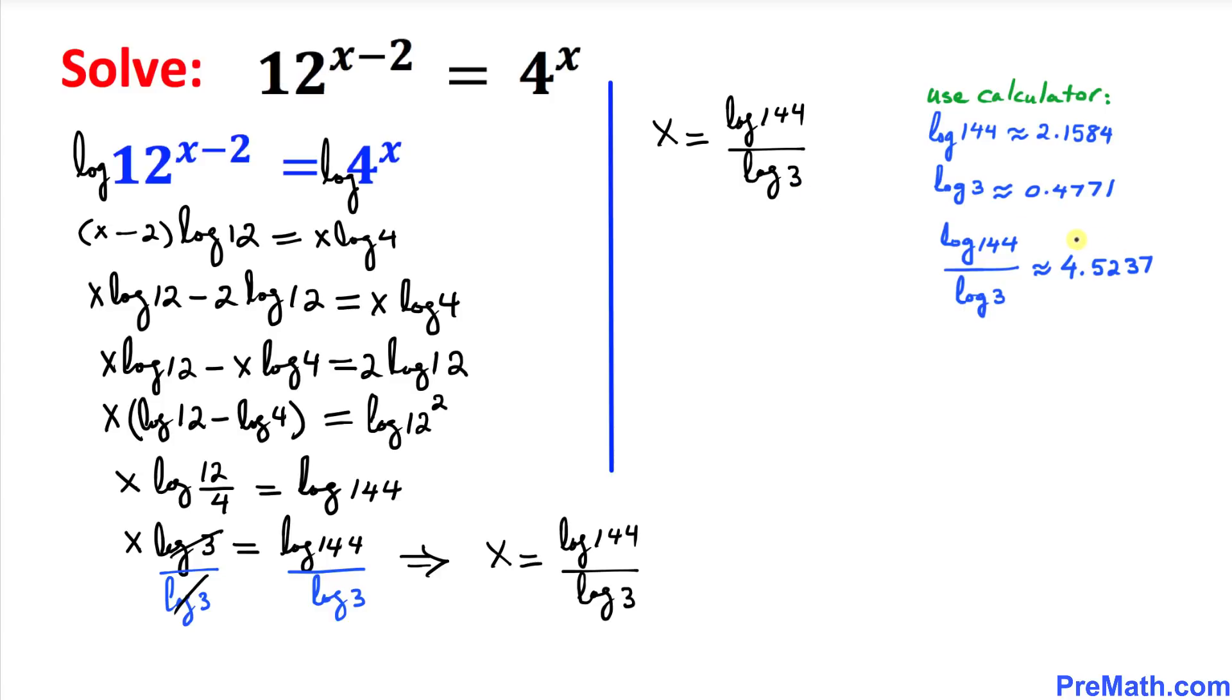So that means x is approximately equal to 4.5237. Thus our solution turns out to be x is approximately equal to 4.5237.